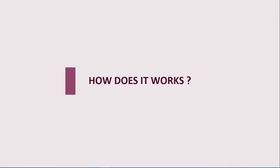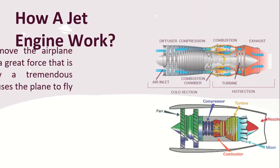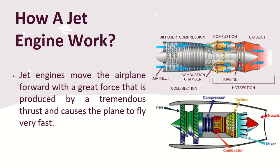How does a jet engine work? Jet engines move the airplane forward with a great force that is produced by tremendous thrust, causing the plane to fly very fast. A jet engine works in a cycle with a diffuser on the front and a nozzle on the back, focused to increase velocity and give thrust through the nozzle to propel the aircraft forward.